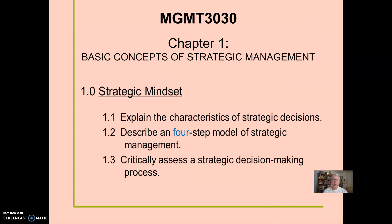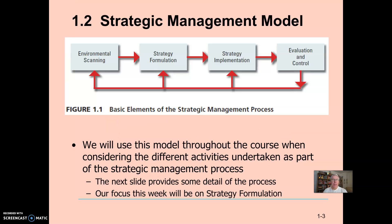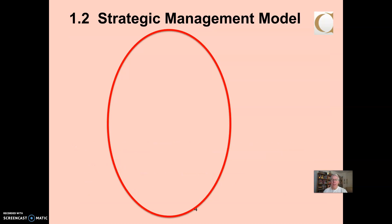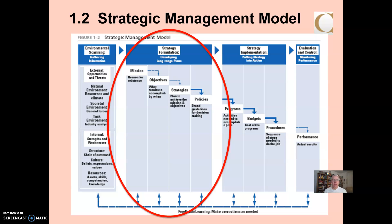The first week, we looked at basic concepts of strategic management, and we started with this model — a four-part model: environmental scanning, strategy formulation, strategy implementation, and then evaluation and control. The more fleshed-out model showed strategy formulation as the second step, but it was where we were going to start in our exploration of strategy.